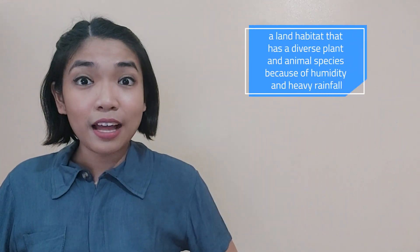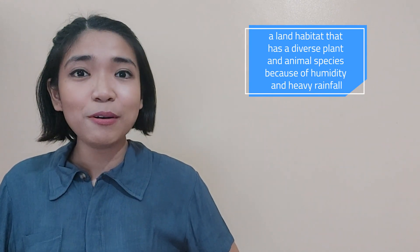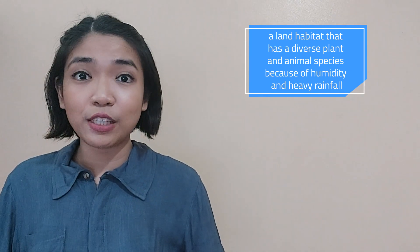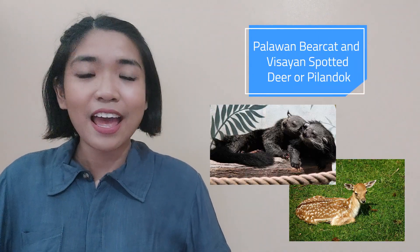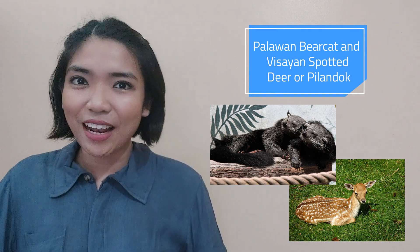Tropical Rainforests — a land habitat that has diverse plant and animal species because of its humidity and heavy rainfall. Some animals sheltered here are gorillas, jaguars, monkeys, snakes, and birds. Our country's land habitat is a tropical rainforest, and it is home to endemic species such as the Palawan Bearcat and the Visayan Spotted Deer, or Pilandoc.